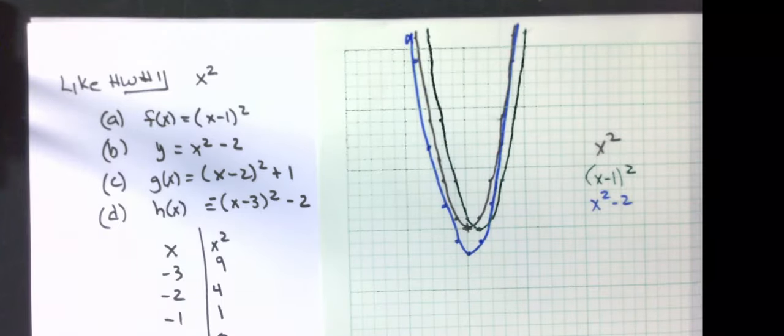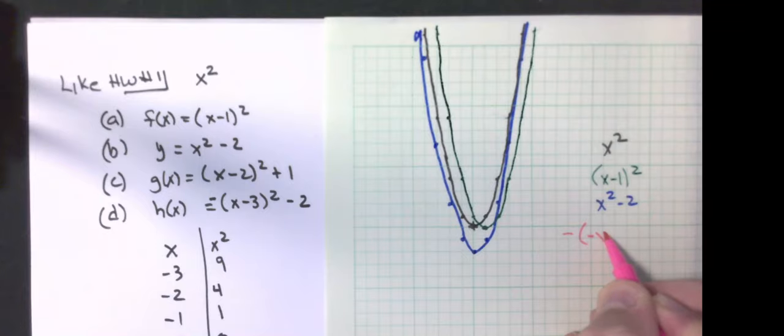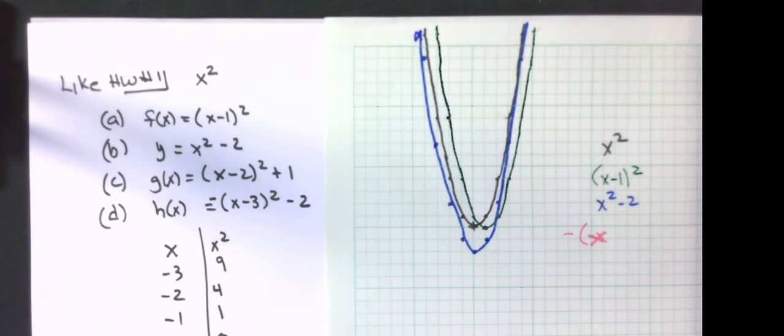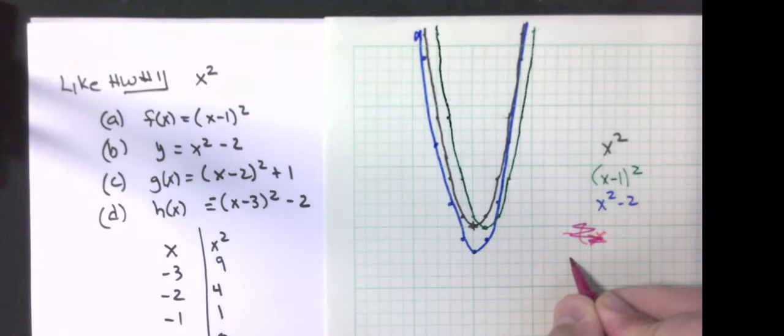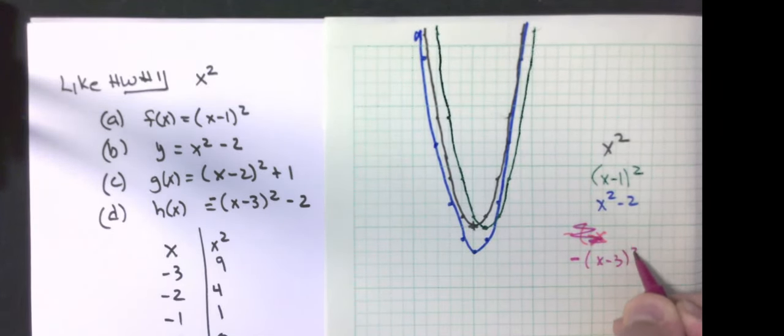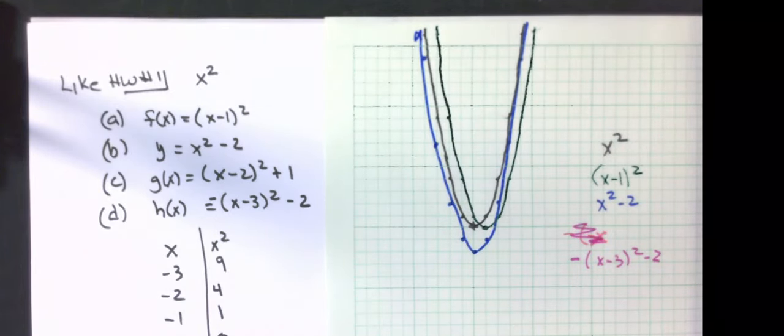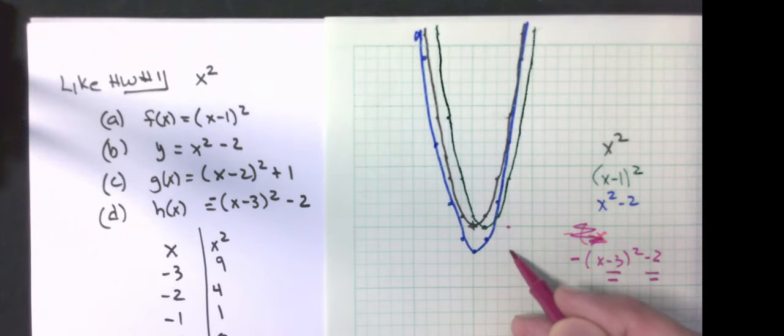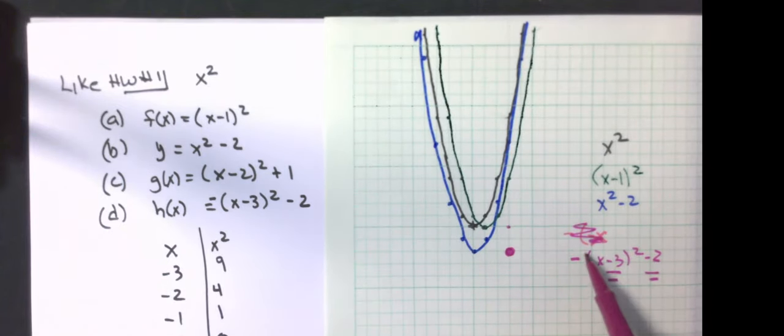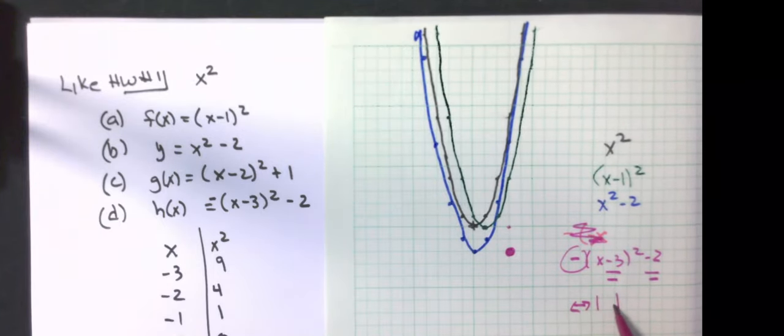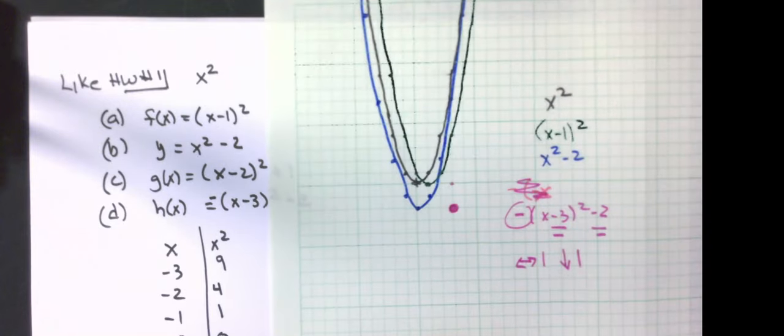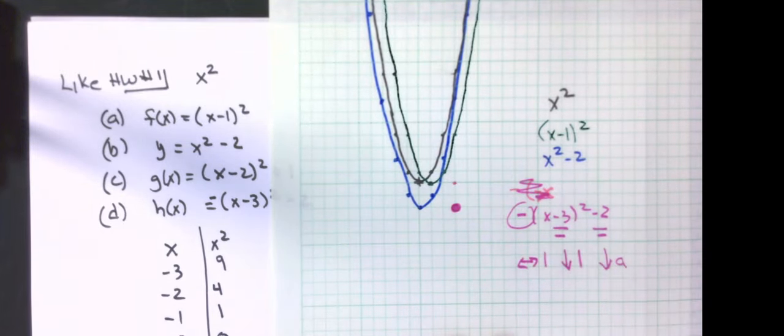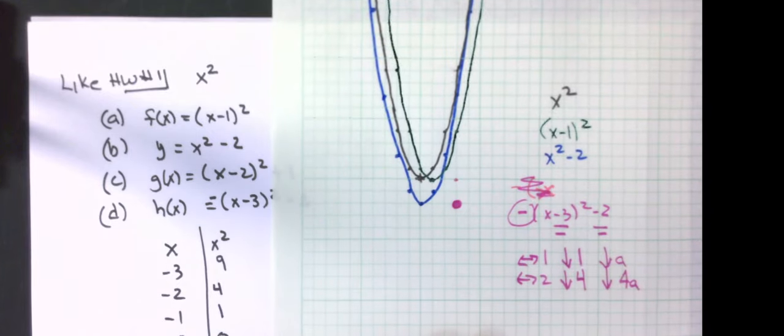And the last one I'm going to graph is negative x minus three squared minus two. Let me get a different color pen. First thing I do is I'm going to find the vertex: three to the right, two down. One, two, three. Down two. There's my vertex. That negative in front of that x squared means I'm going to go over in both directions one and go down one. We actually go down a, which is whatever number is in front. Then I'm going to go over two, down four. We actually go down four a.